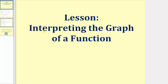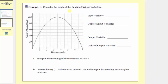Welcome to a lesson on interpreting the graph of a function. Here we're asked to consider the graph of the function h of t shown below, where along the horizontal axis we have time in seconds, and along the vertical axis we have the height of the rocket in feet. We're first asked to identify the input variable and its units, as well as the output variable and its units.